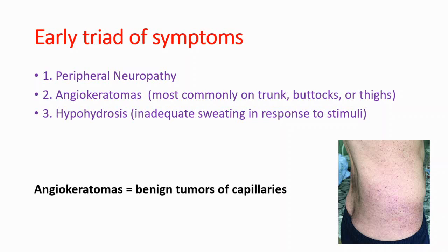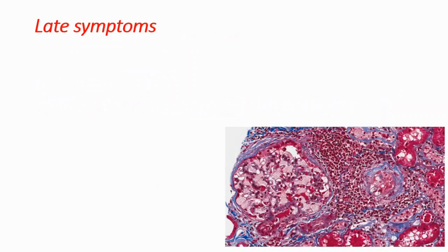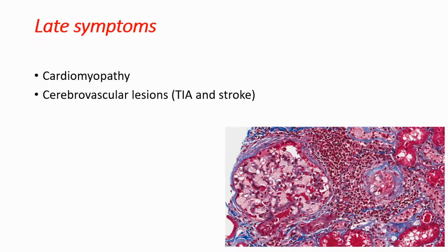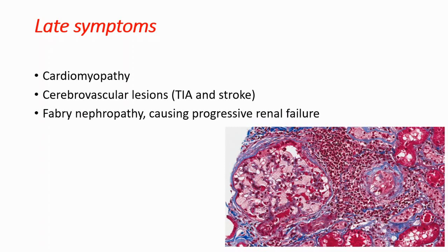The late symptoms affect the heart — for example, cardiomyopathy. Cerebrovascular lesions such as stroke can also be seen in Fabry disease. And most importantly, Fabry nephropathy causes progressive renal failure.